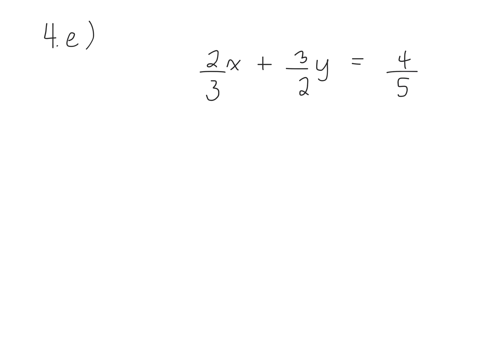Okay, so we have 2 over 3x plus 3 over 2y equals 4 over 5. Again, we need to solve for y in terms of x.